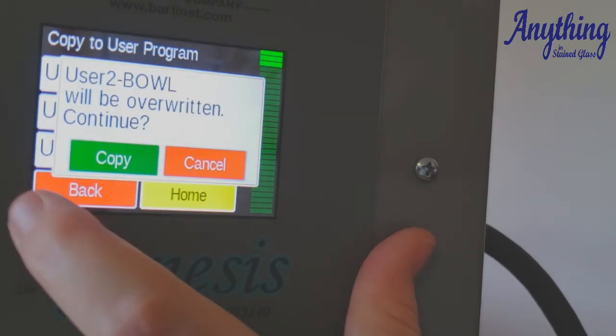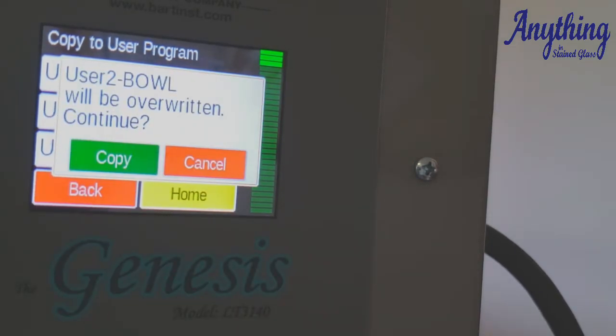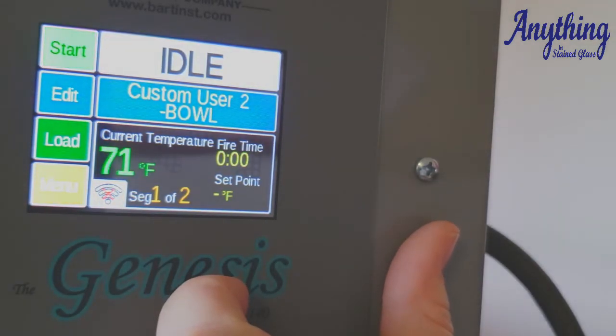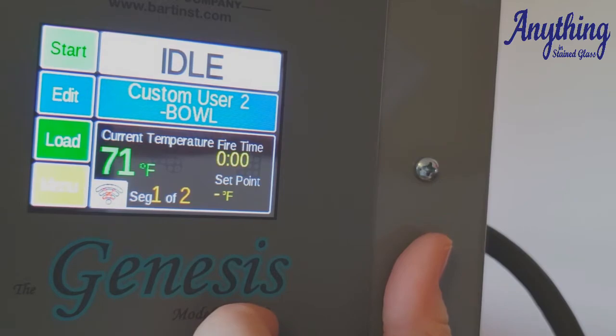Now, if we're rewriting the same one and we want to keep that as the same one, we just choose that user number 2. Yes, we're going to COPY. And now, you see here on your display screen, it shows you user number 2. It's your BOWL. Simply start your firing.